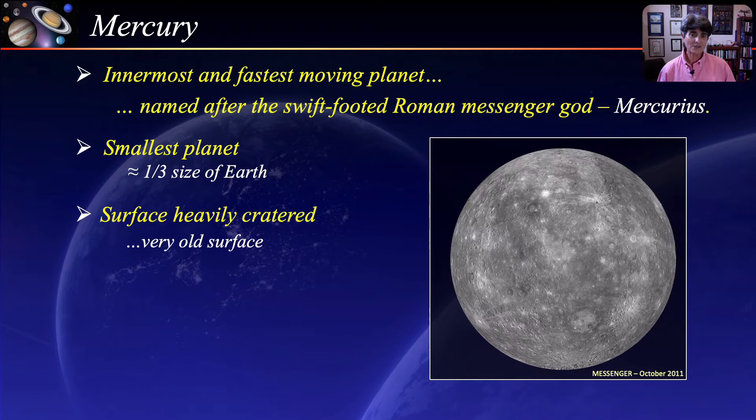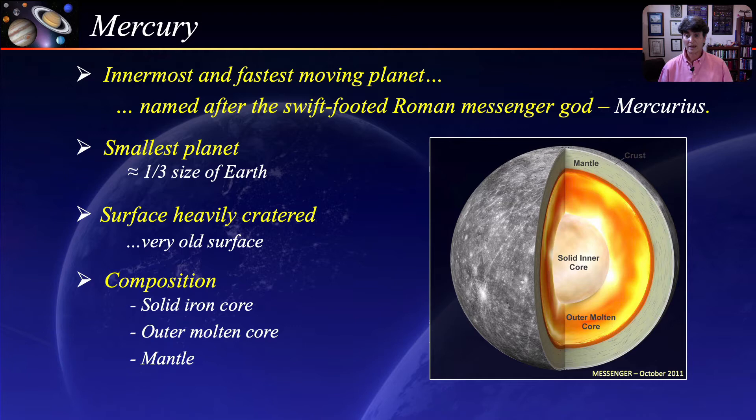This is a beautiful image taken from the Messenger spacecraft. The surface is heavily cratered and is similar to our moon's surface. The heavily cratered surface is usually an indication of a very old and geologically dead surface, but a recent discovery suggests otherwise. Similar to Earth, Mercury has a solid iron core surrounded by a partially molten and liquid outer core, and a solid outer shell or crust called the mantle. Being so close to the sun, Mercury essentially has no atmosphere.